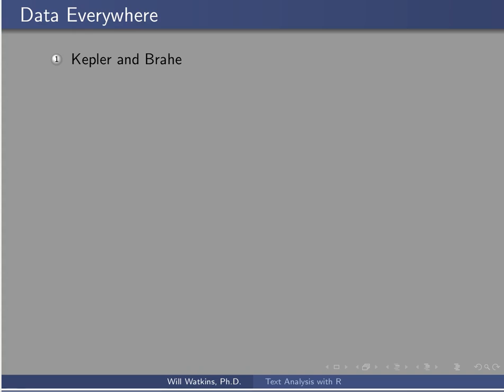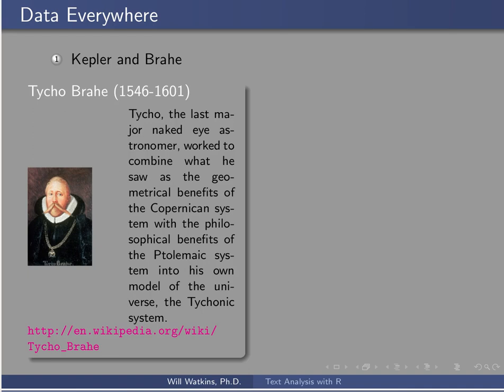Let's begin by talking about data. Way back in the 1600s, Tycho Brahe was a famous and very successful scientist. He was well-funded all of his life — at one point he even had an entire island and a castle given to him where he did research. He was very interested in astronomy and was the last major naked-eye astronomer. He spent most of his life gathering a great amount of data about the planets.